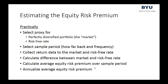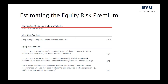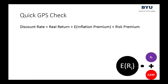Then you annualize the average equity risk premium — but don't do this yourself. Just like the risk-free rate, the Duff & Phelps Valuation Handbook does this for you. The Duff & Phelps recommended equity risk premium was developed in relation to and should be used with a 3.5% normalized risk-free rate. According to Duff & Phelps, in the most recent version, they have an equity risk premium of 5.5% and a risk-free rate of 3.5%.